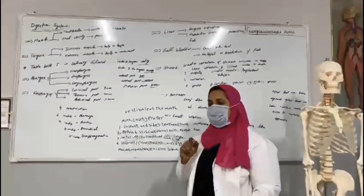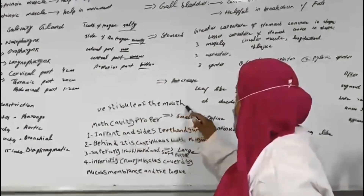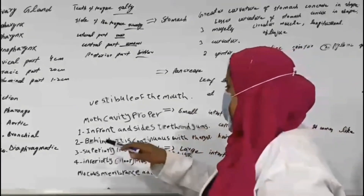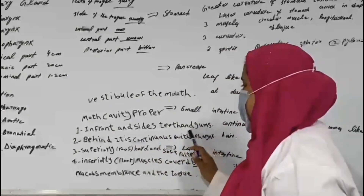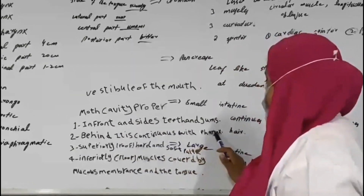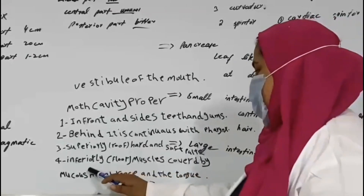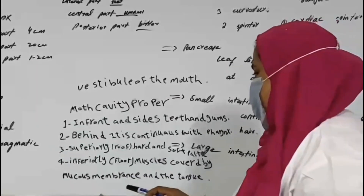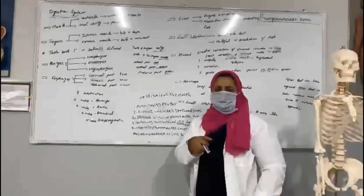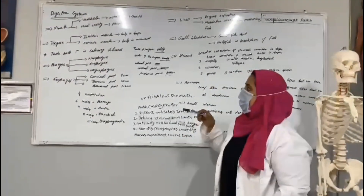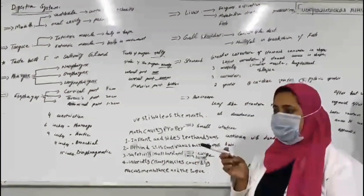The mouth cavity has two parts: the vestibule of the mouth. The mouth cavity has a front and sides with teeth. The superior part is the roof, formed by the hard and soft palate. The inferior floor is covered by muscle. It also contains mucosa and the tongue.